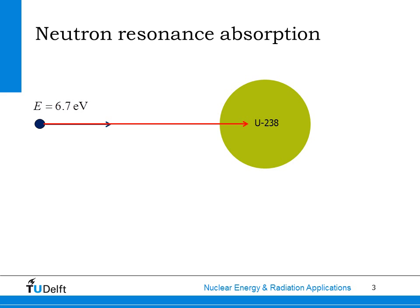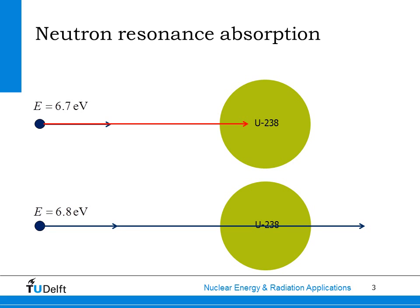If, however, the energy of the neutron is only a little bit higher, say 6.8 eV, there is a mismatch between the neutron energy and the resonance peak, and the neutron can easily pass the uranium nucleus without being absorbed, indicated here by the blue arrow.